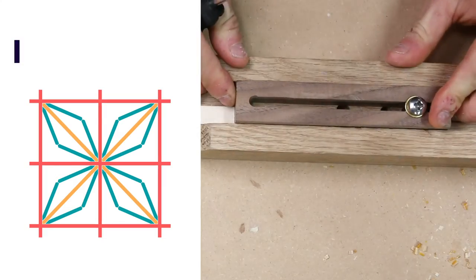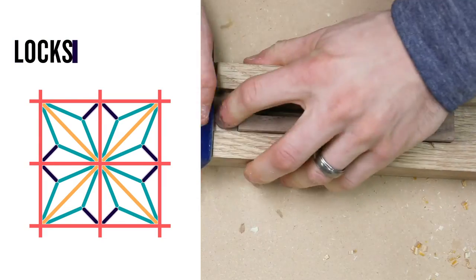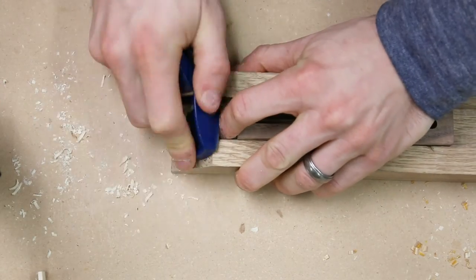Finally, for the locks, I start by cutting a 90 degree angle on one end just like I did with the diagonals.